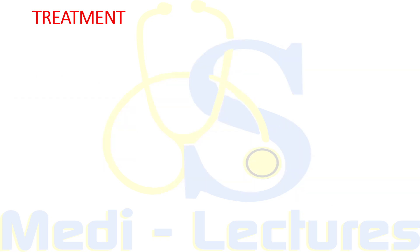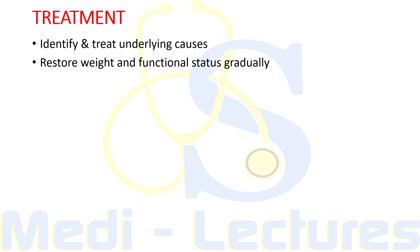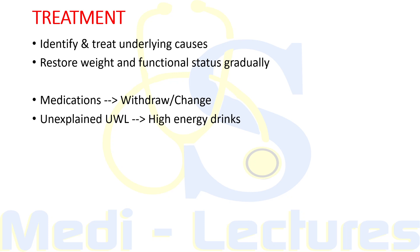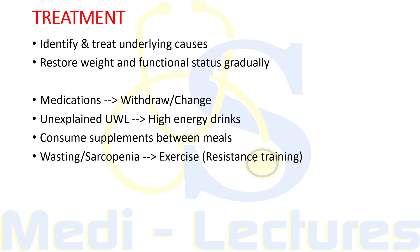Coming on to treatment, the first priority in managing weight loss is to identify and treat the underlying causes. Treatment of underlying metabolic, psychiatric, infectious, or other systemic disorders is usually sufficient to restore weight and functional status gradually. Medications causing nausea or anorexia should be withdrawn or changed if possible. For those with unexplained unintentional weight loss, high-calorie, dense energy drinks are prescribed, and protein supplements should be consumed between meals rather than with meals to avoid early satiety. For wasting and sarcopenia, exercise, especially resistance training, is recommended.